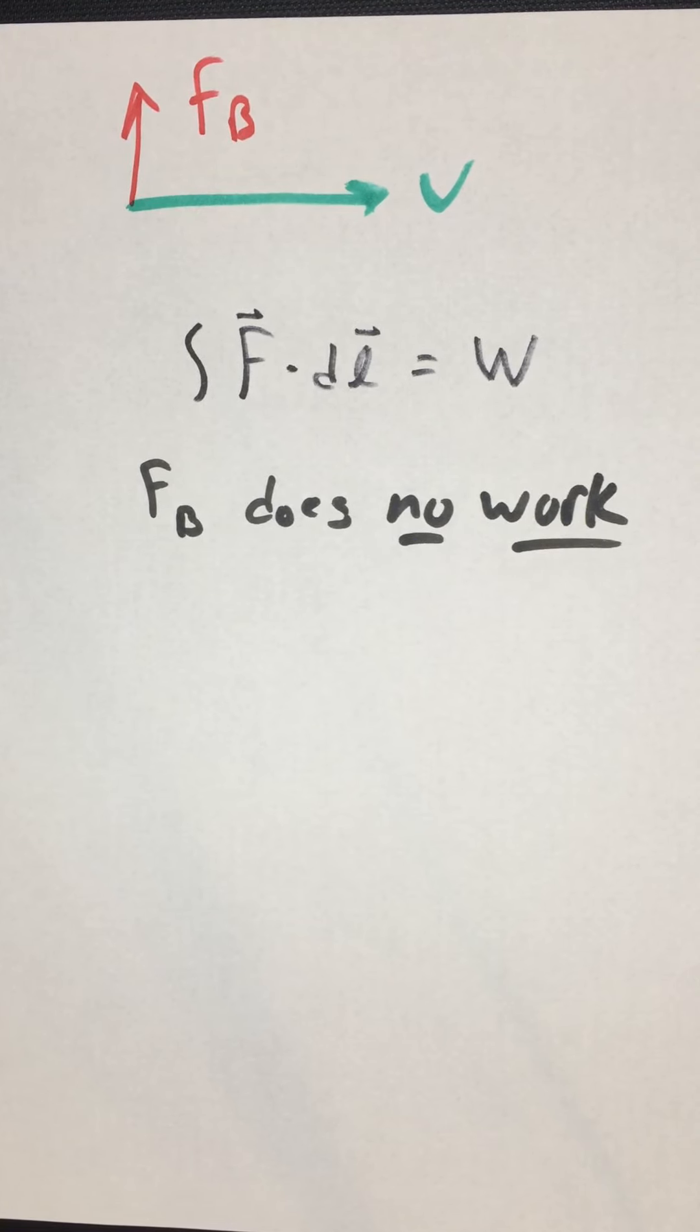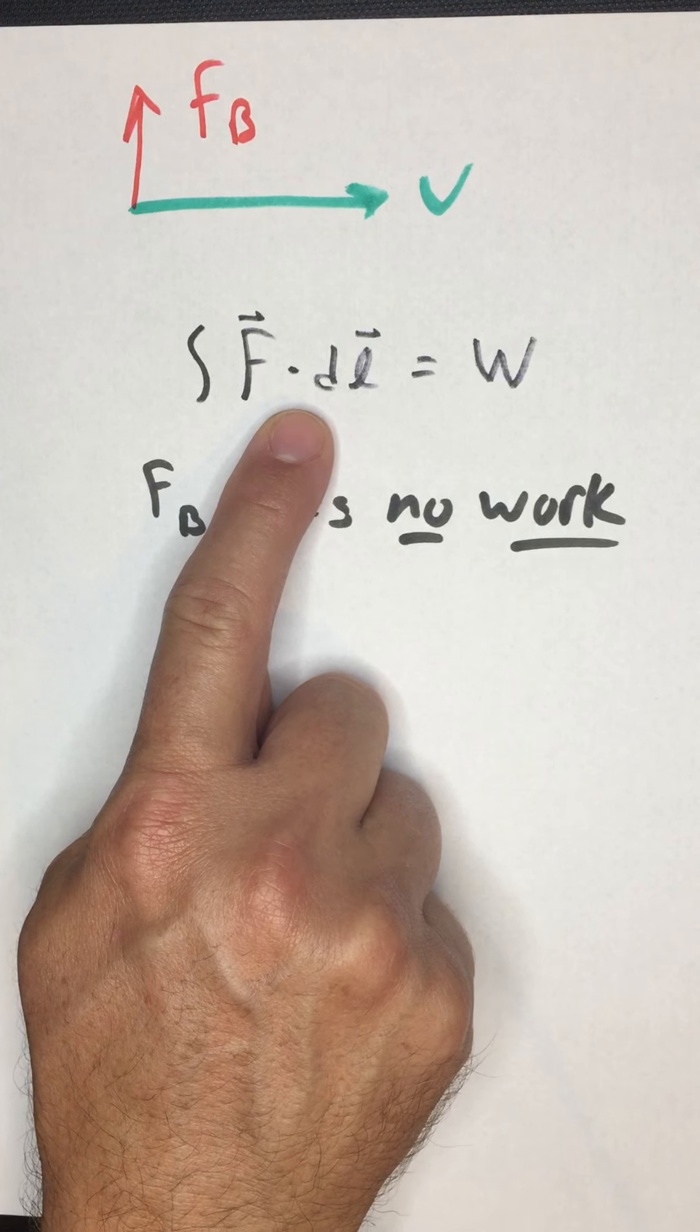It's also very counterintuitive. You will find situations, especially if you go on to study electromagnetism, where it seems crazy to deny that the magnetic force is doing work. But we have to deny it because this is pretty incontrovertible. F dot DL is always zero if F and DL are perpendicular.